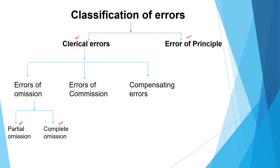Then there is error of commission. This is an error where the amount is debited or credited to the wrong account, or the wrong amount is put into the correct account, or it is put into the correct account but on the wrong side. All such errors — whether while posting, carrying forward, or totaling — occurring due to the fault of the clerk are classified as errors of commission.